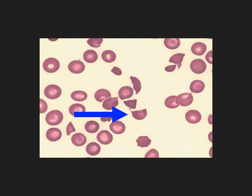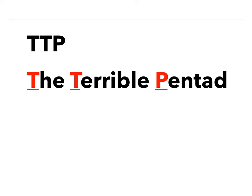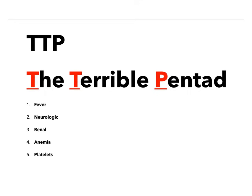Here you can see what a schistocyte looks like. The red blood cell was trying to pass through the vasculature, but platelet aggregation caused it to be sliced in half, creating these schistocytes. The mnemonic for TTP is the terrible pentad — five very classical symptoms: fever, neurologic symptoms, renal problems, anemia, and thrombocytopenia. TTP is the terrible pentad.